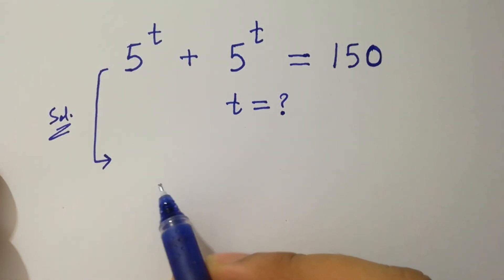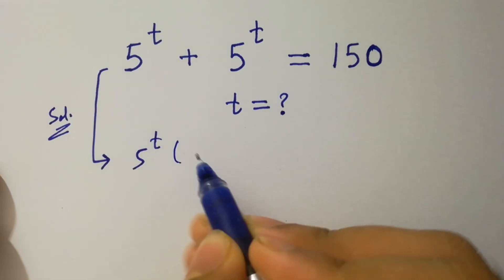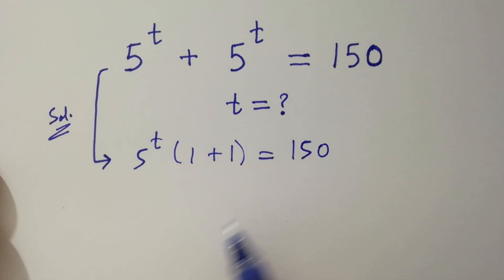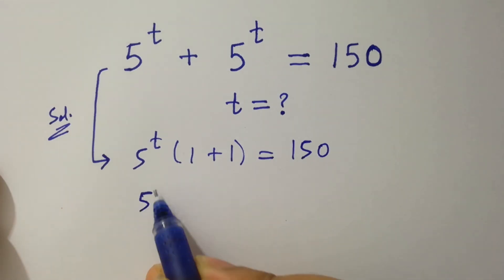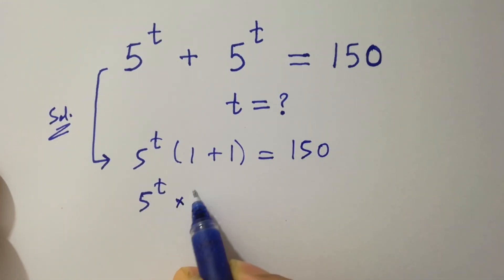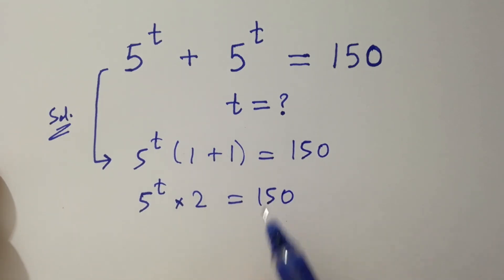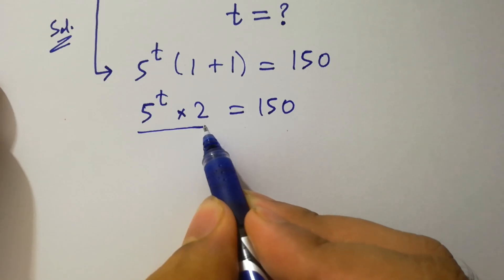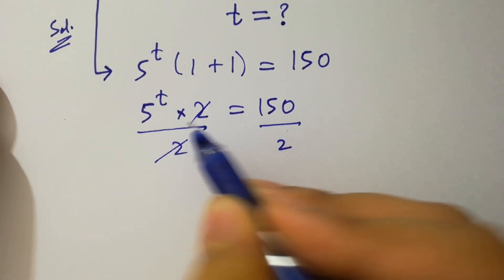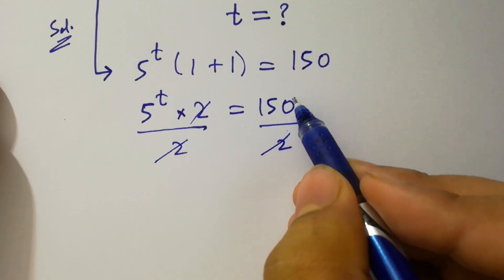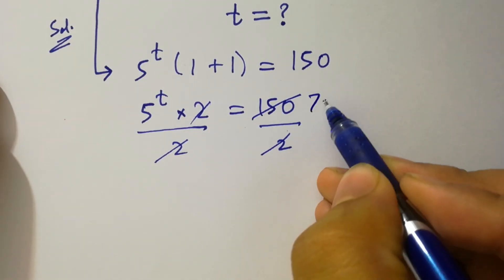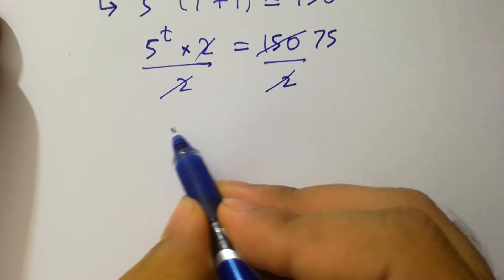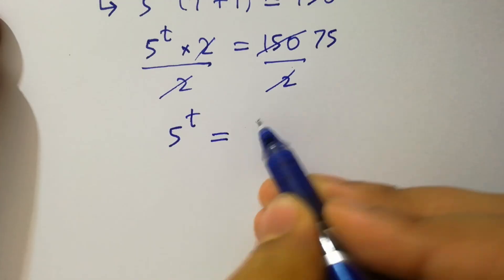5 to the power t can be common. We have here 5 to the power t times 1 plus 1 equal to 150, and 1 plus 1 is 2, equal to 150. To find t, divide by 2 on both sides. 2 and 2 cancel, and 2 times 75 is 150, so 5 to the power t equals 75.